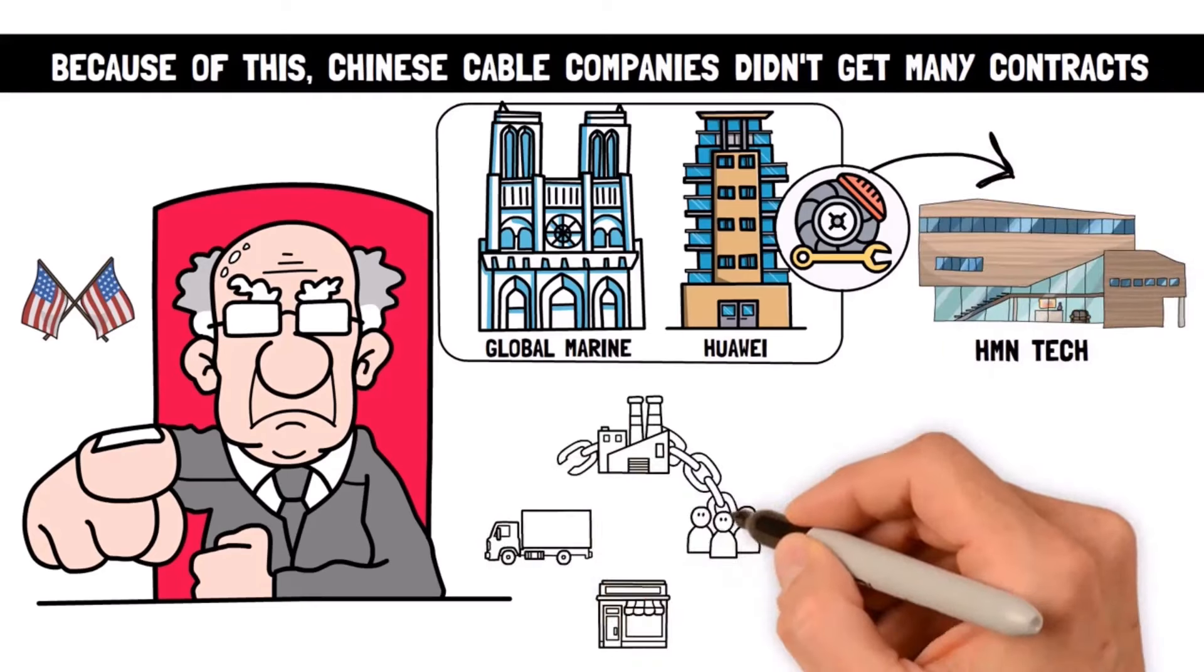But even though the US is good at planning cables, China is better at fixing them when they break. When a cable has a problem, it needs to be fixed fast. So whoever can do the job quickly is the one who gets it. China has been taking care of the cables in its nearby seas, even the ones that belong to America and Japan. Some people think this could be a chance for spying.